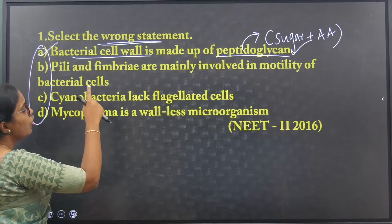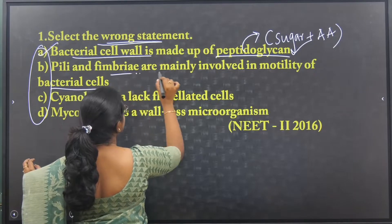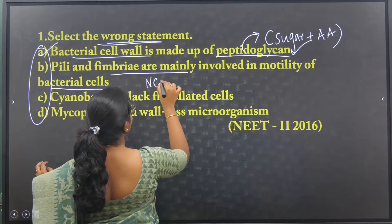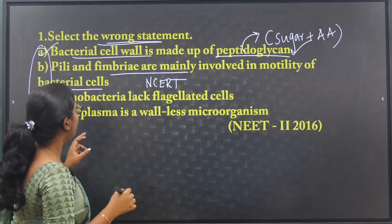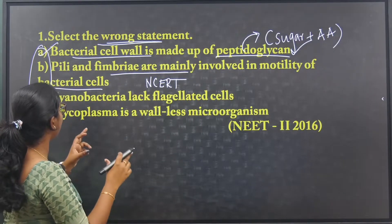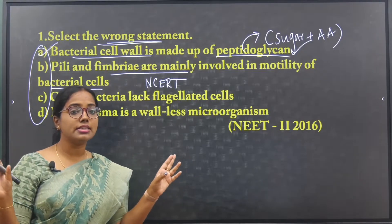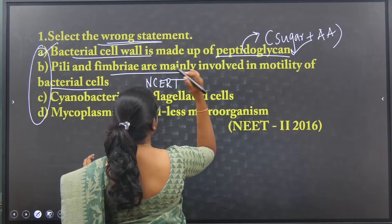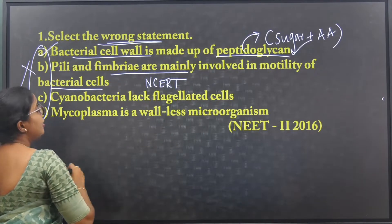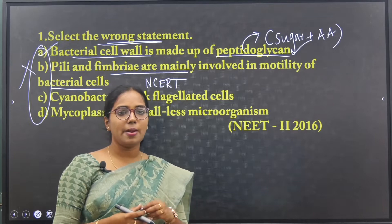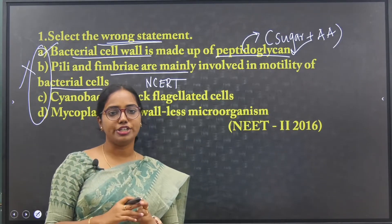Second statement: pilli and fimbria are mainly involved in motility of the bacterial cells. This is a direct statement from the NCERT book. But the thing is, in NCERT it is stated that pilli and fimbria are NOT involved in the motility of the cells. So this is the wrong statement — the correct statement is they are not involved in the motility of the cells.